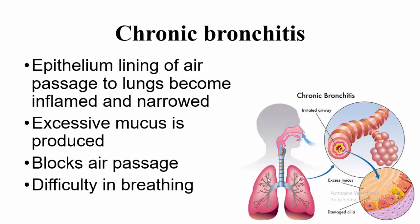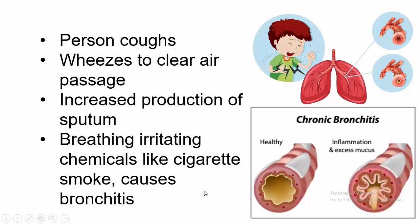Our next topic is Chronic Bronchitis. The epithelium lining of air passage to the lungs becomes inflamed and narrowed. Excessive mucus is produced. In this diagram, we can see the air passage lining is inflamed and narrowed. The yellow lining is the mucus production. If mucus production is increased, this blocks the air passage and the person feels difficulty in breathing. Irritating chemicals like cigarette smoke cause bronchitis. This is the healthy air passage and this is the inflamed and excessive mucus-produced air passage.